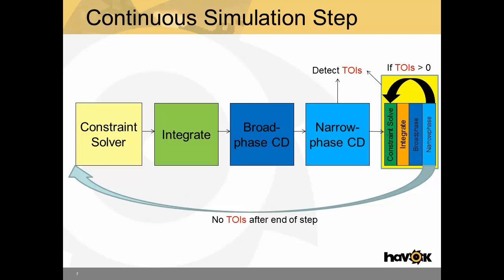As you can imagine, TOIs can be really expensive. It's for this reason that HAVOC allows for many parameters to be tweaked in order to determine how often TOIs occur and for which objects. This allows for you, the user, to balance performance versus accuracy.